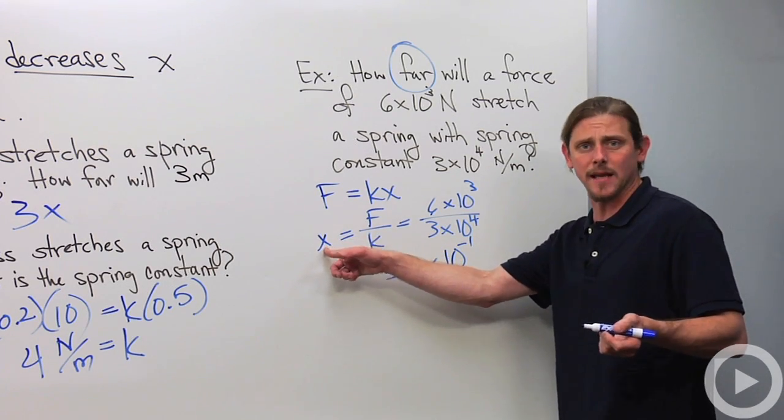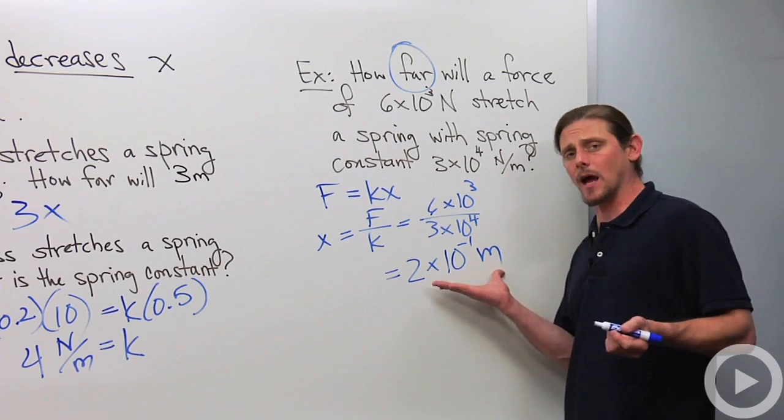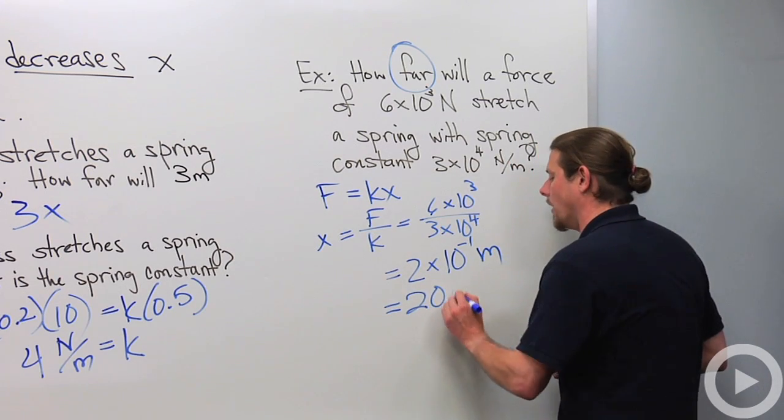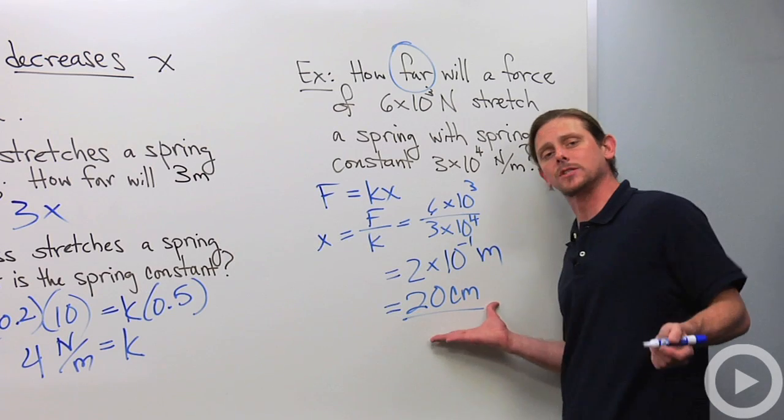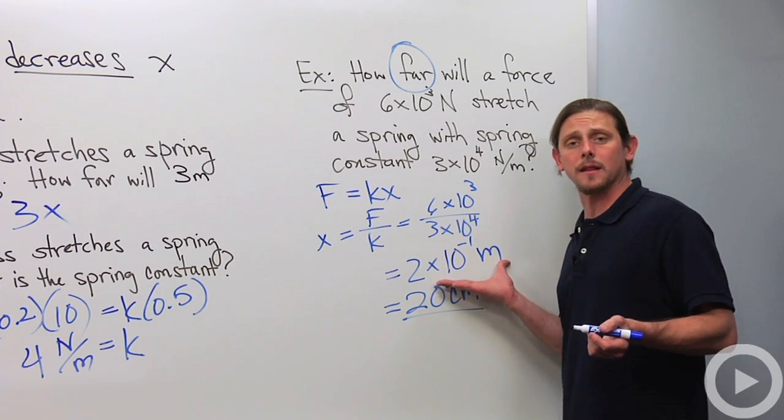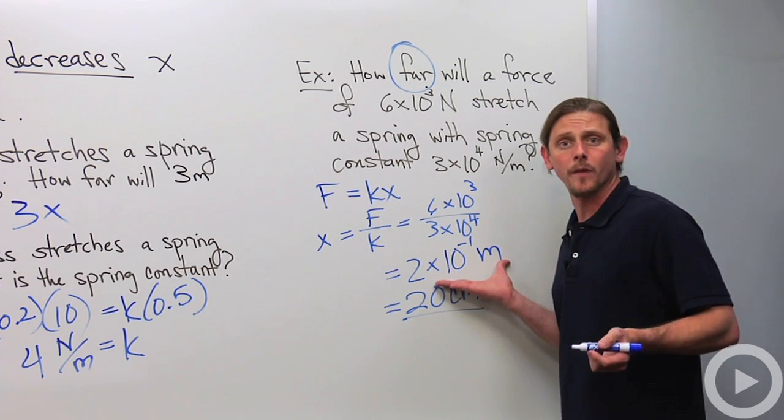Everything's in SI units, so everything's in SI units. And now if we wanted to be all cool about it, we could write it as 20 centimeters. But 2 times 10 to the minus 1 meters is fine too. And that's Hooke's law.